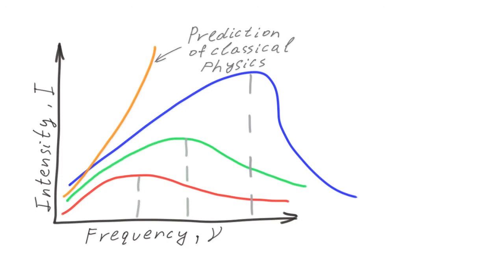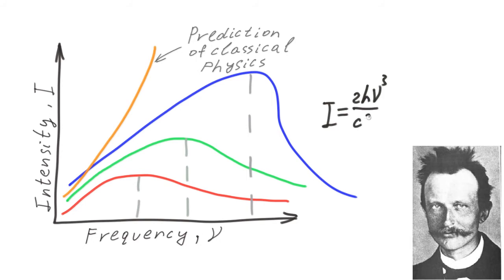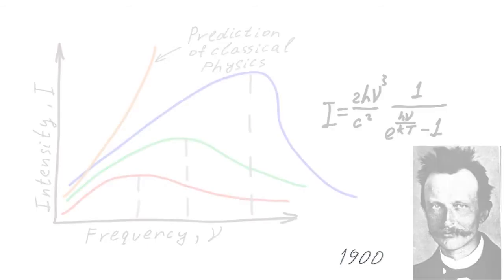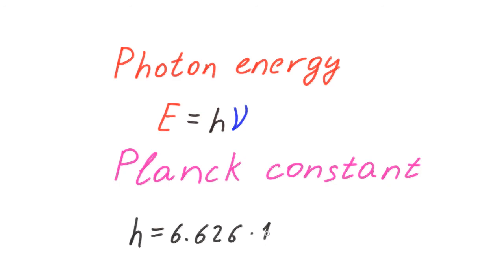Historically, the birth of quantum mechanics is associated with solving this problem. It was Max Planck who succeeded in deriving the formula correctly describing thermal radiation. He assumed that energy is emitted only by discrete portions, quanta. The quantum of the electromagnetic field was called a photon. The energy of a photon is proportional to its frequency. The Planck constant serves as the coefficient of proportionality. Now it belongs to the list of fundamental physical constants, just like the speed of light.